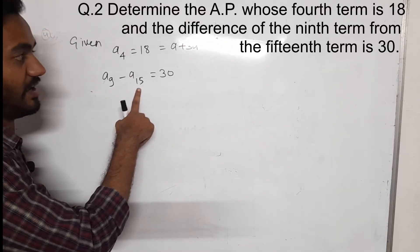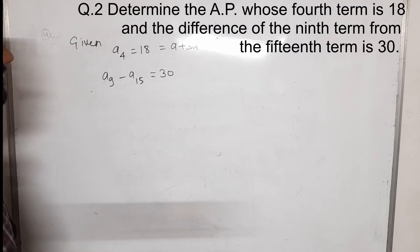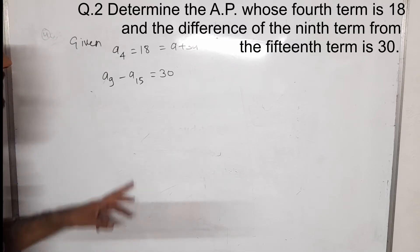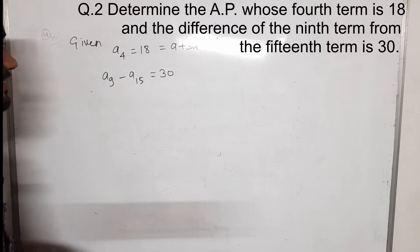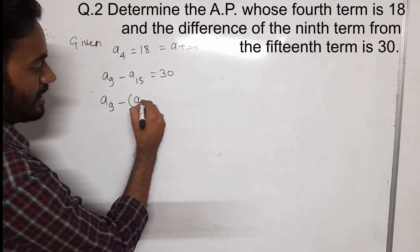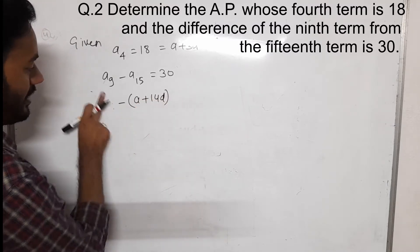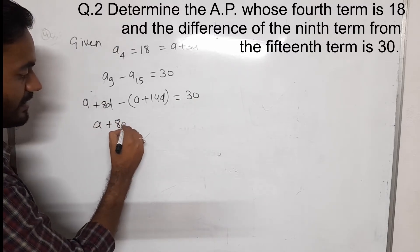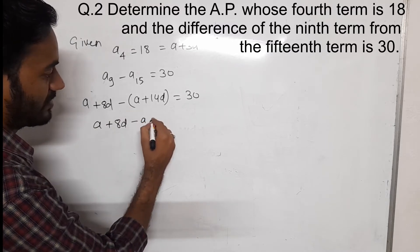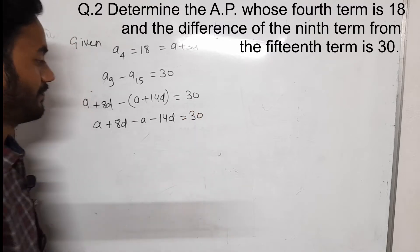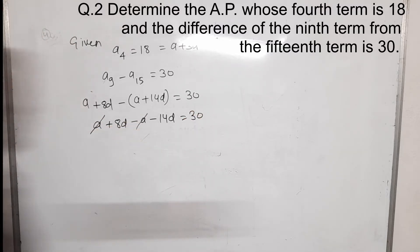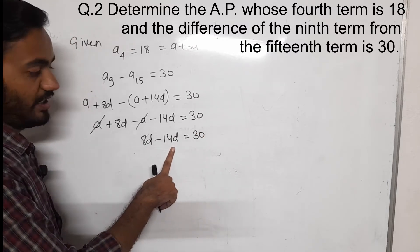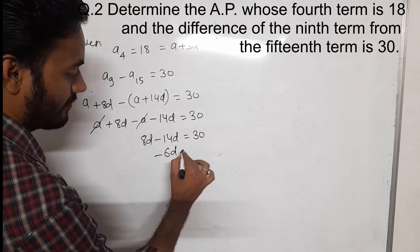And here A15 minus A9 is 30. So A plus 14D minus (A plus 8D) equals 30. Here A and A get cancelled. Then 8D minus 14D equals 30, which gives minus 6D equals 30.